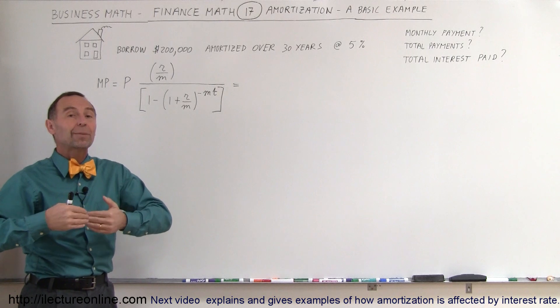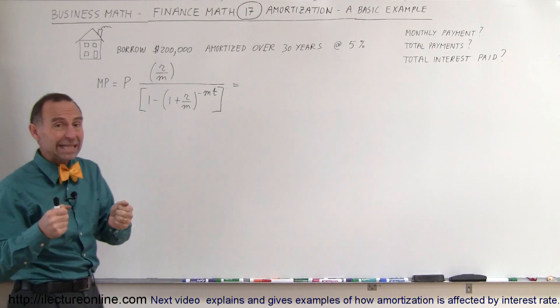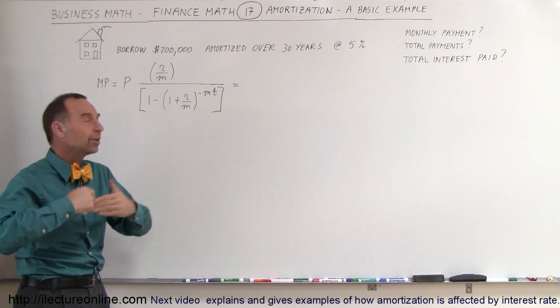Amortization is used when we borrow money, for example, to buy a house. So we go and buy a house, we don't have all the money cash to pay for the house, we need to borrow some money from the bank.